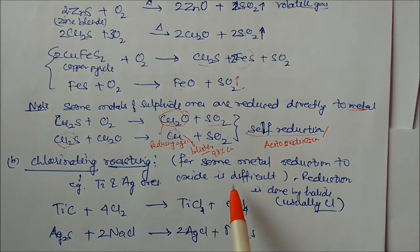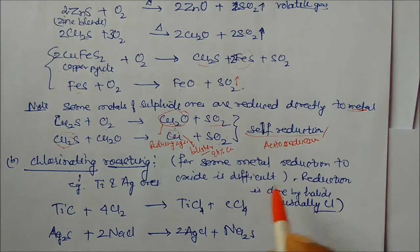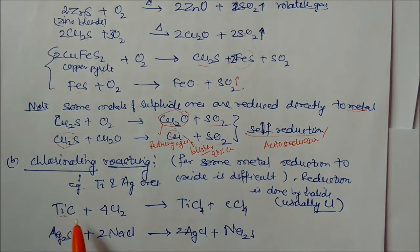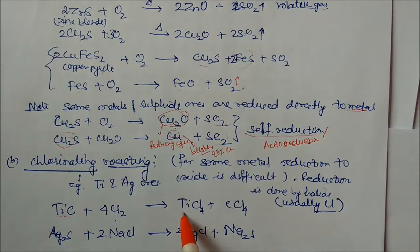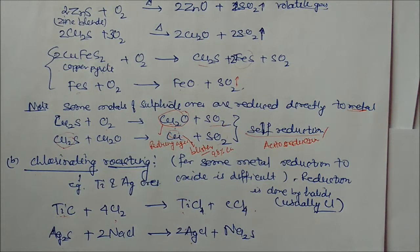Chlorinating roasting is used for metals that are difficult to oxidize, such as titanium and silver. Instead of oxygen, chlorine is supplied: titanium reacts with chlorine and carbon to form titanium chloride plus CCl4. For silver sulfide, NaCl is used — it reacts to form silver chloride plus Na2S. Regular roasting is not possible for these metals.